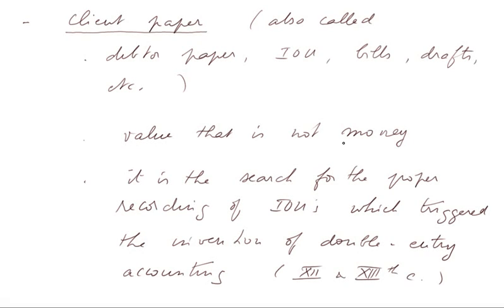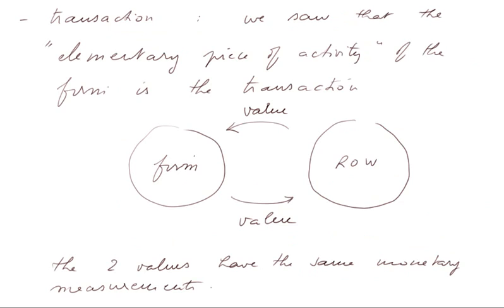Client paper has value, but it's not official money. And it is the search for the proper recording of its use which triggered the invention of double-entry accounting in the 12th and 13th century in Western Europe, and more specifically in Northern Italy. To finish this lesson, we may mention that we began to understand what a transaction is — the elementary piece of activity of the firm.